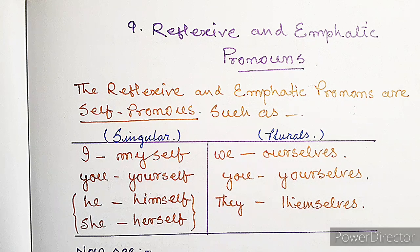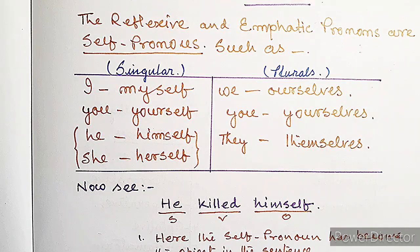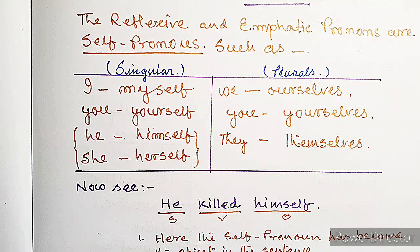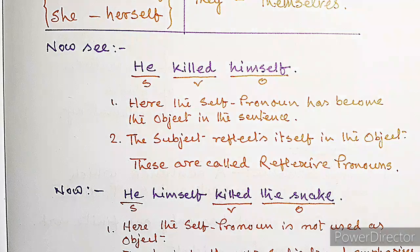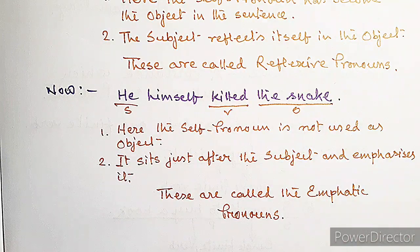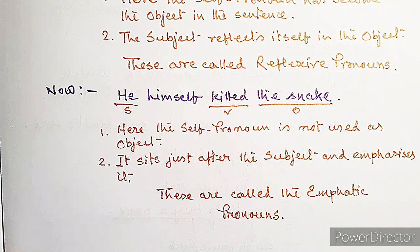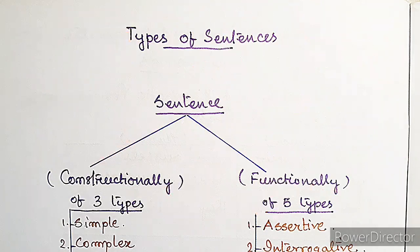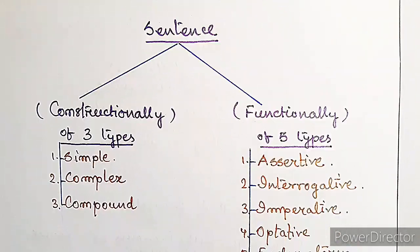Reflexive and emphatic pronouns are always the self-pronouns. In singular: myself (from I), yourself (from you), himself (from he), herself (from she). In plural: ourselves (from we), yourselves (from you), themselves (from they). In 'He killed himself', the self-pronoun is the object — the subject reflects itself in the object; these are reflexive pronouns. In 'He himself killed the snake', the self-pronoun sits after the subject and emphasizes it — these are emphatic pronouns.